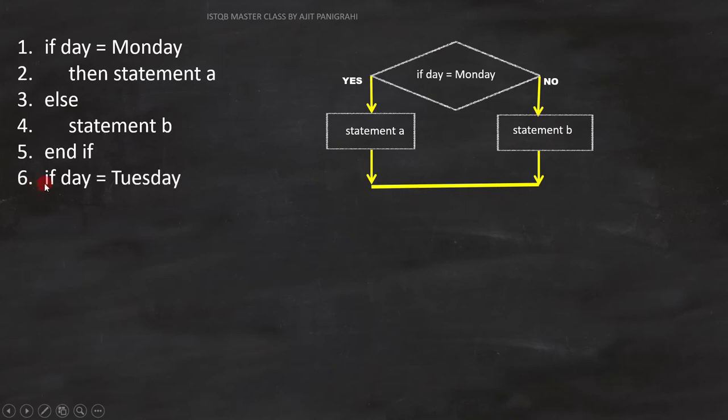The sixth line is day equals to Tuesday. Since it is a condition, we have to represent it like this on flowchart. If condition on line 6 is true,